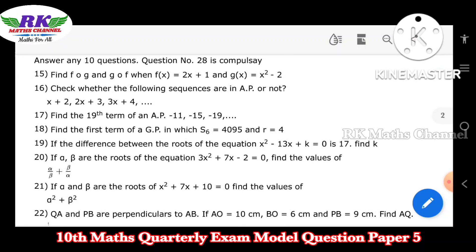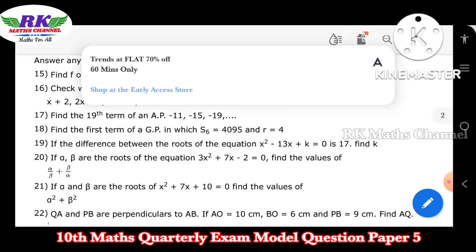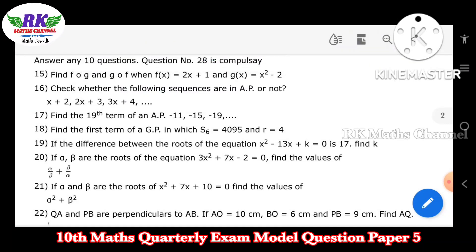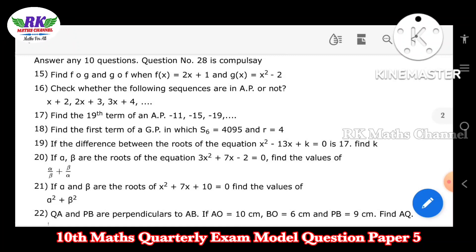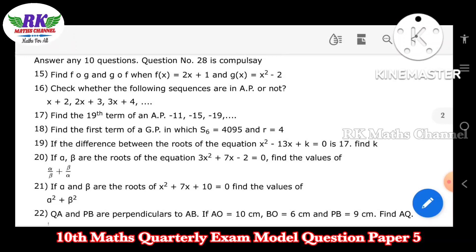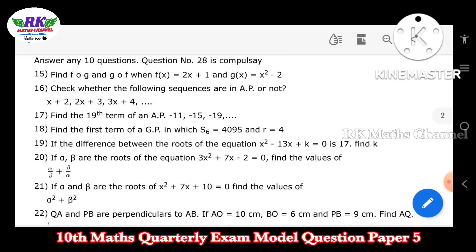Question number 18: find the first term of a GP in which S6 — that means the sum of 6 terms — equals 4,095, and R equals 4, then find the first term A. Question 19: if the difference between the roots of the equation X squared minus 13X plus K equals 0 is 17, find the value of K.